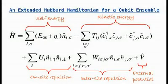Our theoretical treatment for the ensemble of qubits is based on an extended Hubbard model. The model Hamiltonian includes the self-energy, the kinetic energy, the on-site repulsion, the inter-site repulsion, and an external potential term.